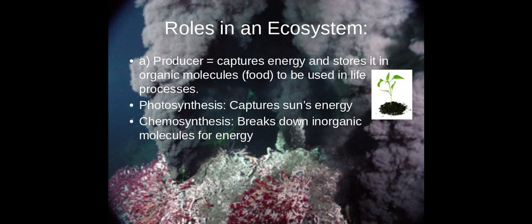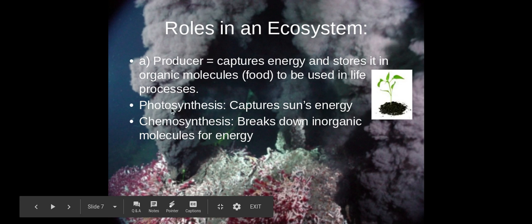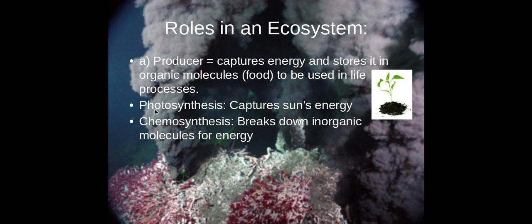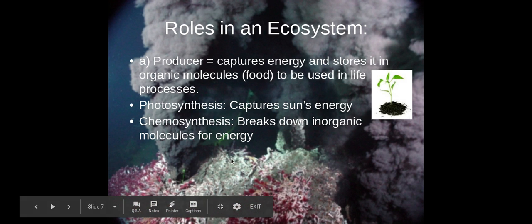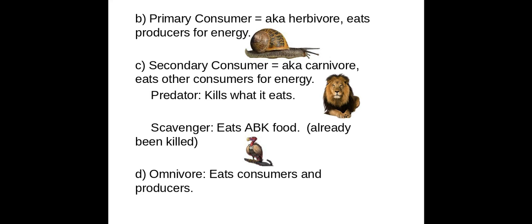Now we're going to look at the complexity of ecosystems. Producers are the ones that capture energy to get energy going for an ecosystem — without producers you would not have an ecosystem. They capture energy and store it in food molecules, such as plants. At a deep sea vent, bacteria and other organisms use sulfur minerals coming out of the sea floor to build food molecules — that's called chemosynthesis, as opposed to photosynthesis where plants capture the sun's energy.